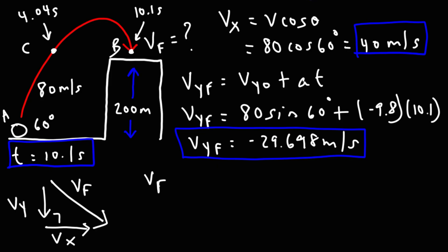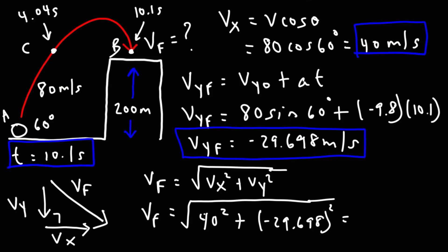So using the Pythagorean theorem, Vf is going to be the square root of Vx squared plus Vy squared. So the magnitude of the final velocity will be the final speed, which is what we're looking for. Speed is always positive. So Vx is 40, we're going to square that. And then Vy, once we square it, the negative sign is just going to disappear. So this gives us an answer of 49.8 meters per second. So that is the final speed of the projectile just before it hits the building at point B.